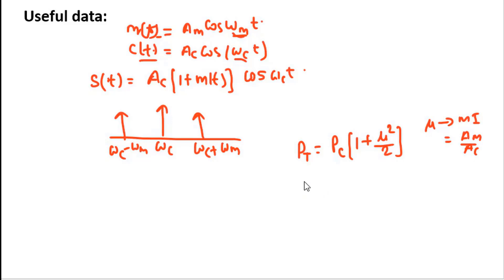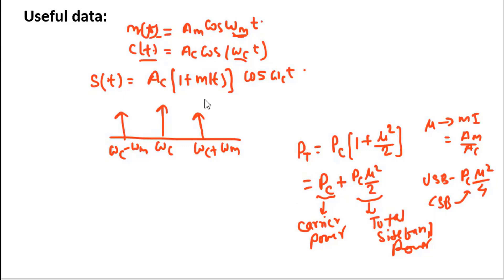If you expand this equation, you get Pc + Pc μ²/2. This is your carrier power, and this is your total sideband power. If you divide it by 2, you get the power in USB as Pc μ²/4, and LSB also has Pc μ²/4. So this is the frequency spectrum of amplitude modulation.